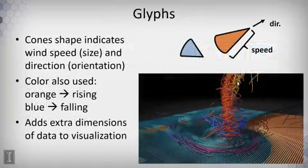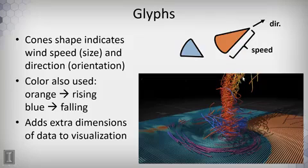For example, here's a simulation of a tornado that's part of a presentation visualization at the NCSA. And on the ground, we have an array, basically a grid of cones laid out.